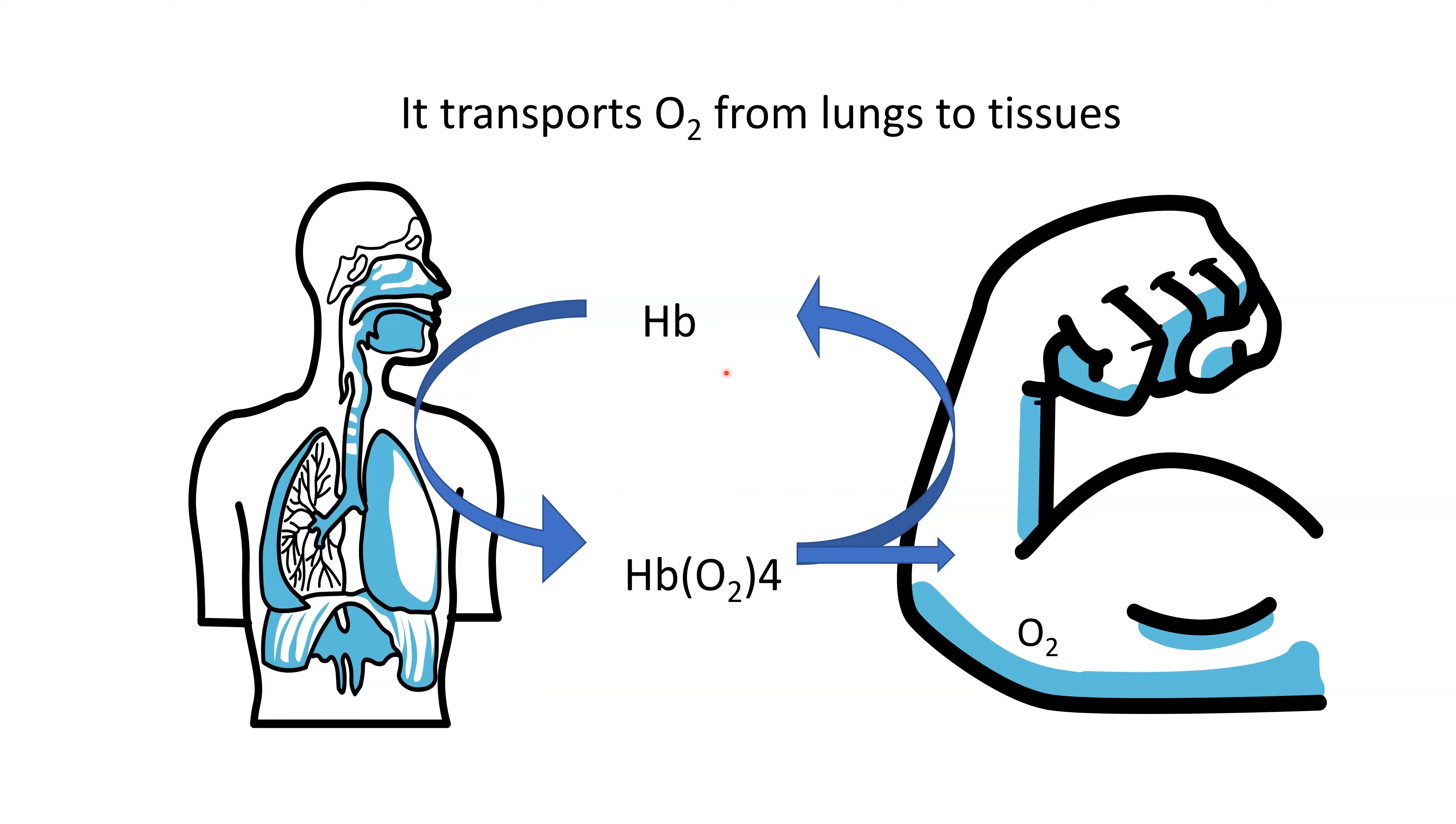Hemoglobin is also important for the transportation of carbon dioxide to lungs, and it acts as a buffer and maintains our blood pH.